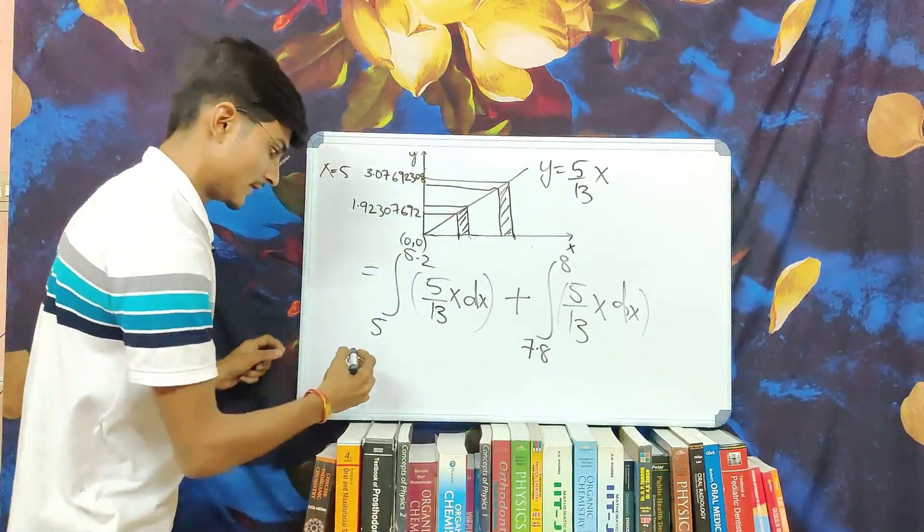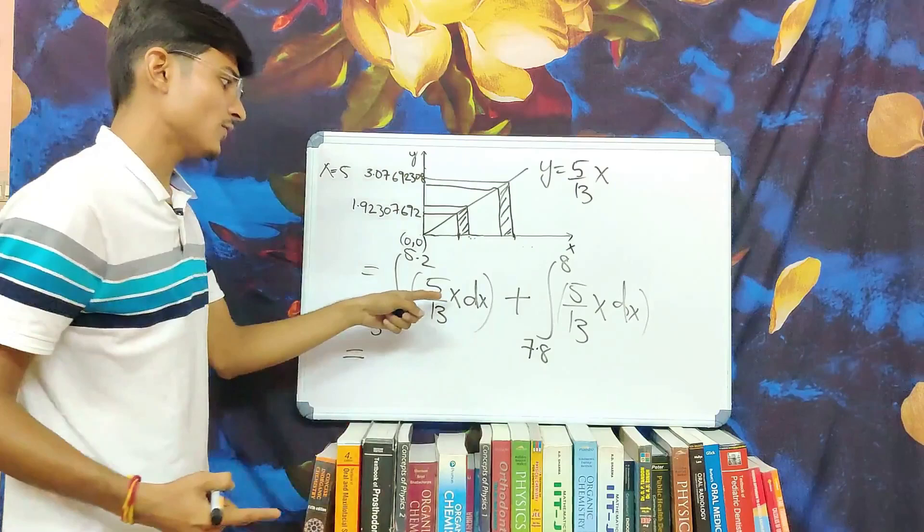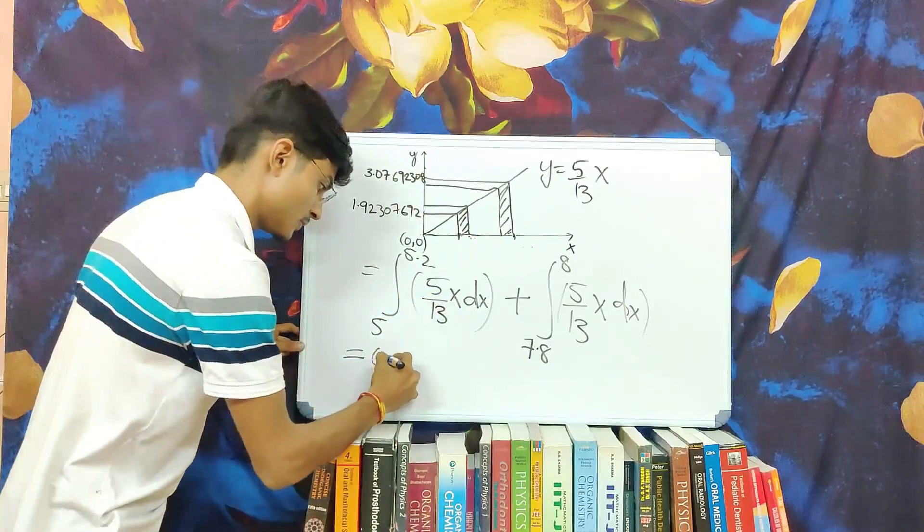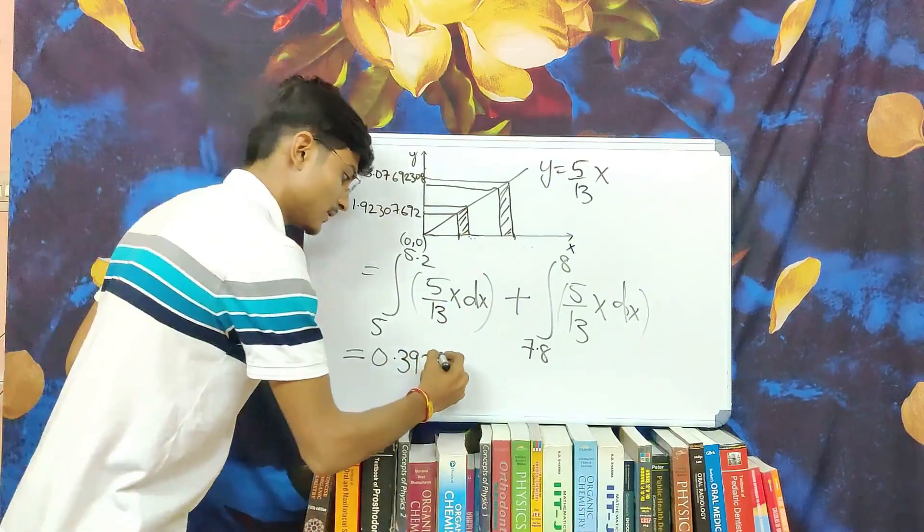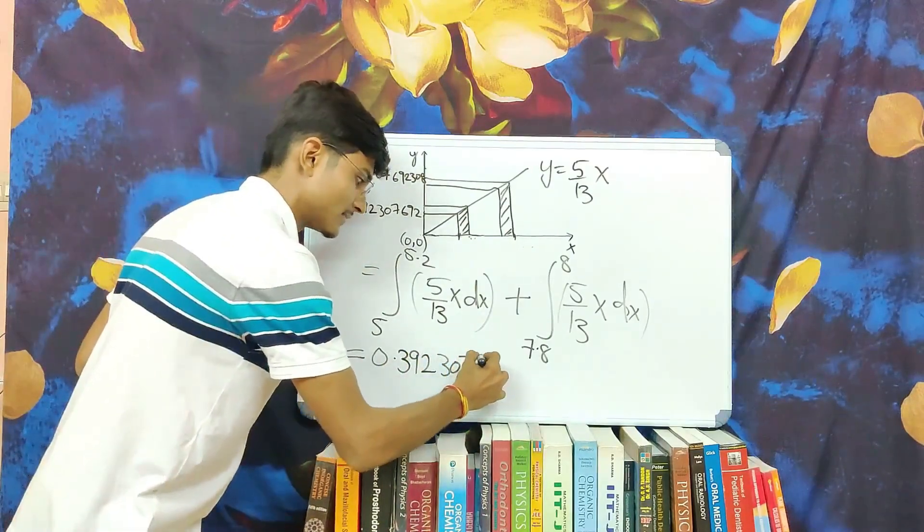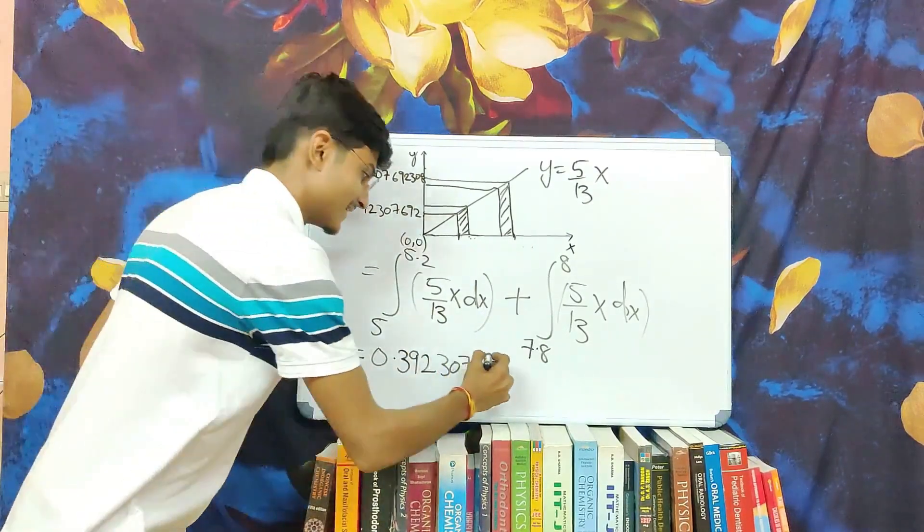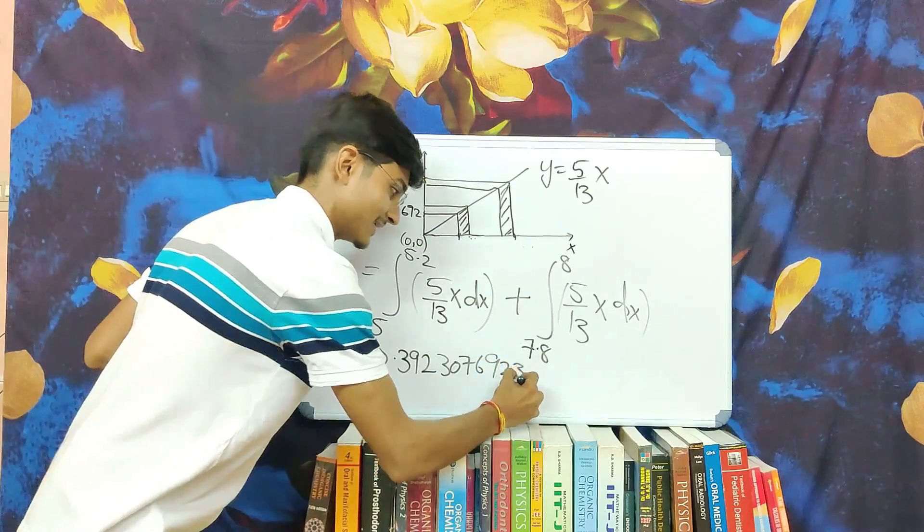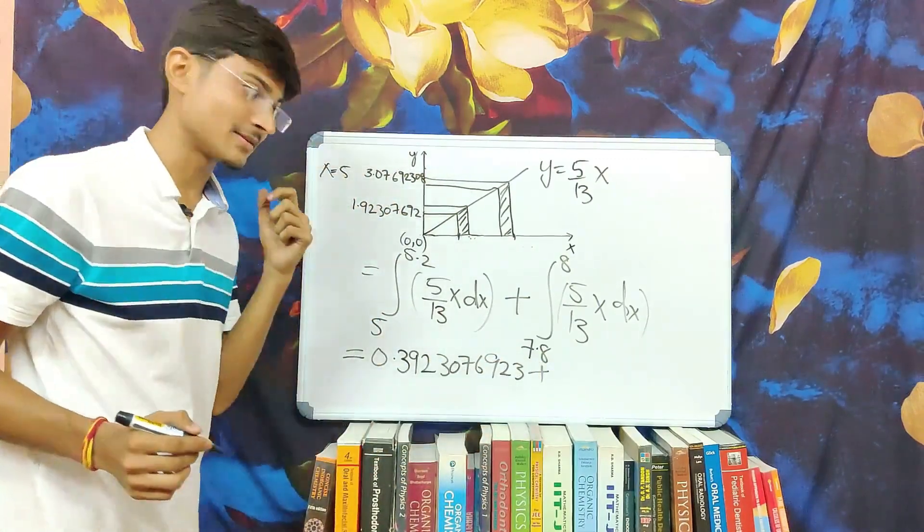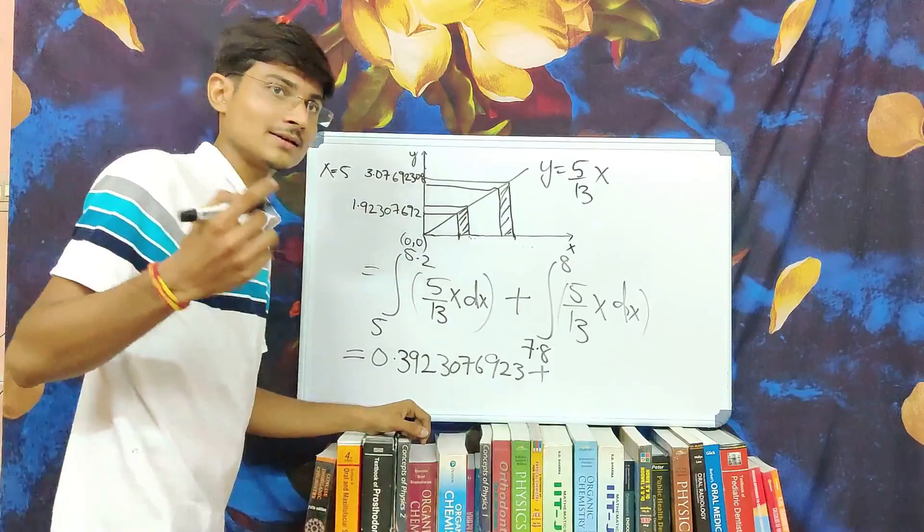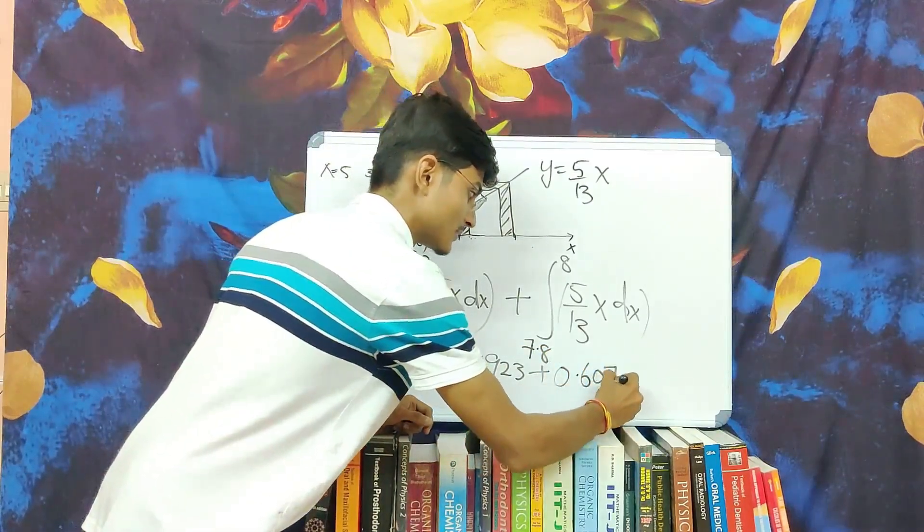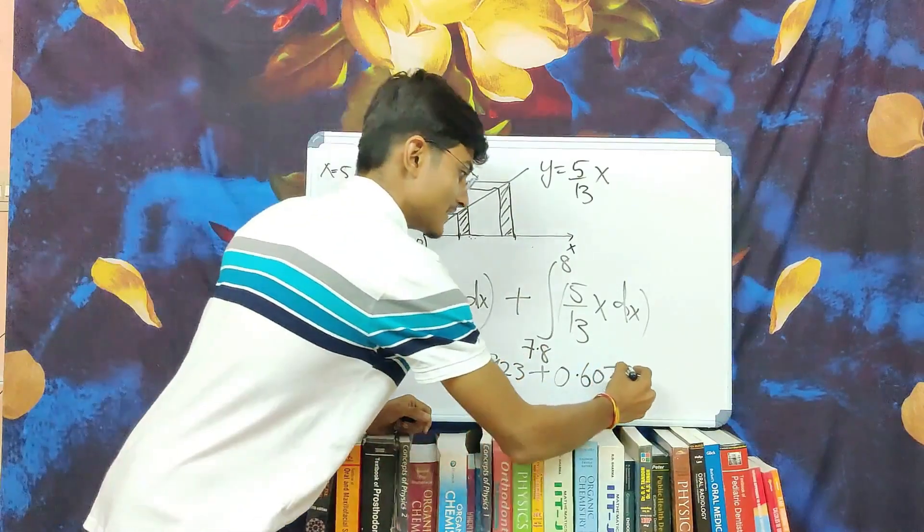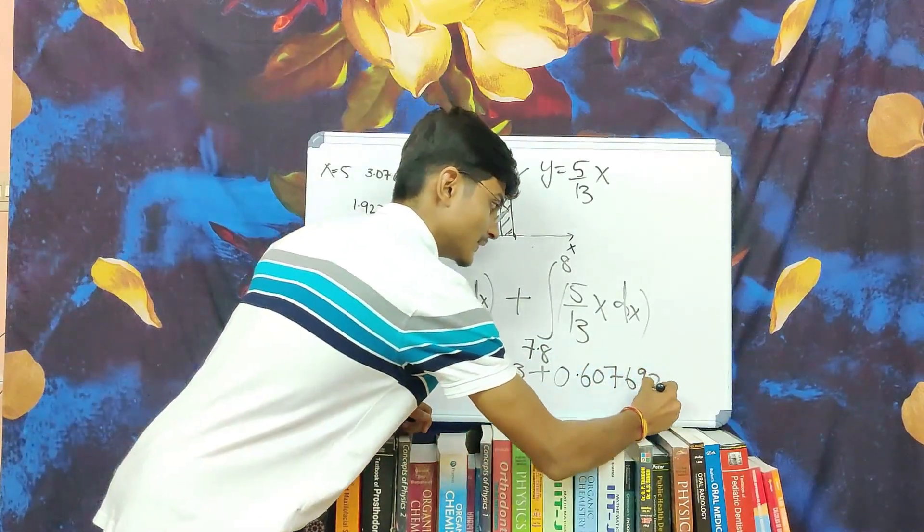Upon integration, we will get the area of this one equal to 0.3923076923. I know it's a large number but it's necessary. And other area is equal to 0.6076923.